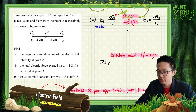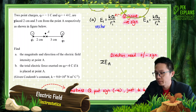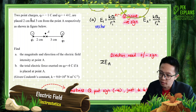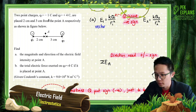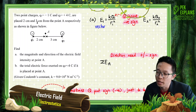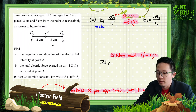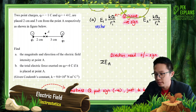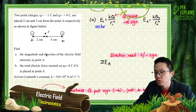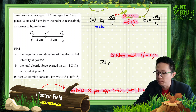Now the questions for electric field: two point charges, Q1 negative 1 Coulomb and Q2 positive 4 Coulomb, are placed 2 cm and 3 cm from the point A respectively, as shown in the figure below. So we have two charges here — one is a negative charge and one is a positive charge. Find the magnitude and direction of the electric field intensity at point A.